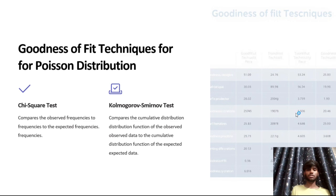Next, we discuss the goodness of fit technique for a Poisson distribution. The G-squared test compares the observed frequency to the expected frequency. The Kolmogorov-Smirnov test compares the cumulative distribution functions of the observed data to the cumulative distribution function of the expected data.